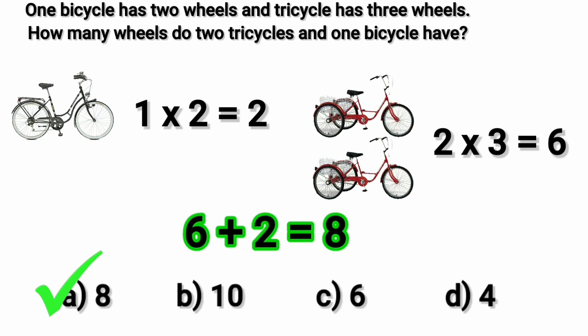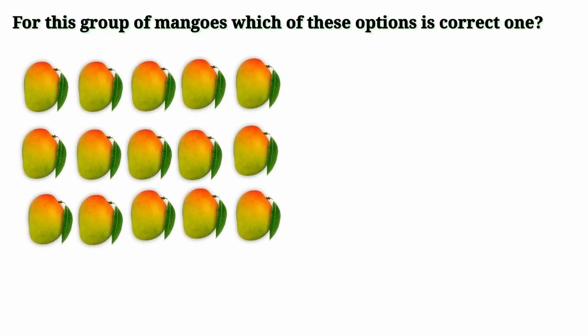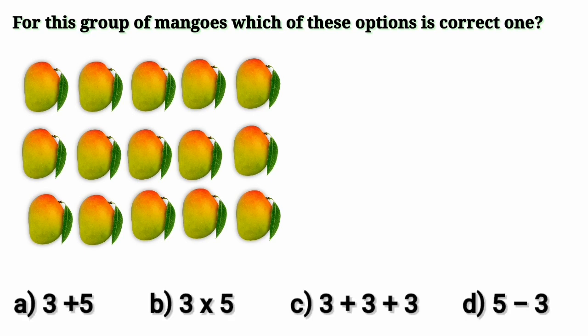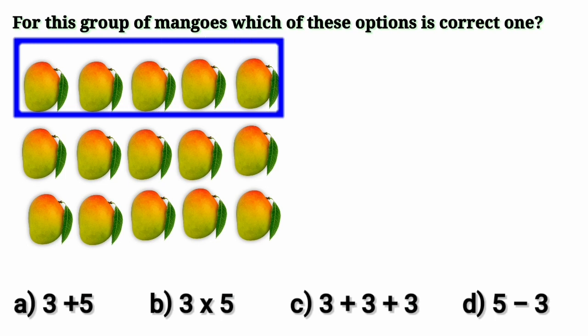Moving to our next question. For this group of mangoes, which of these options is the correct one? Look carefully kids. In the first row of mangoes we have one group of five mangoes, so one fives are five.